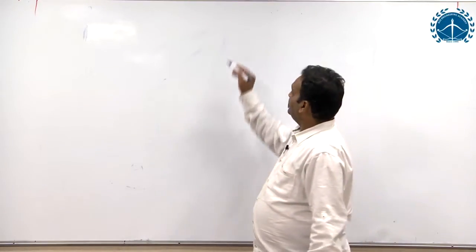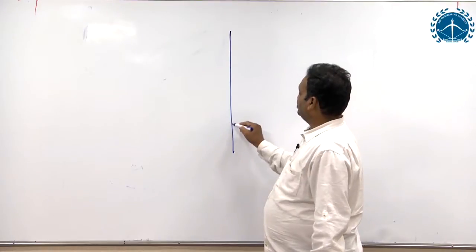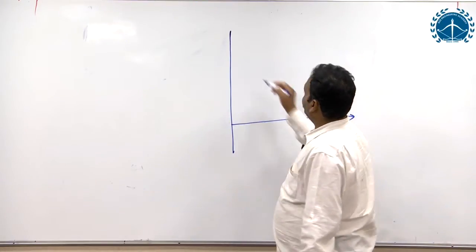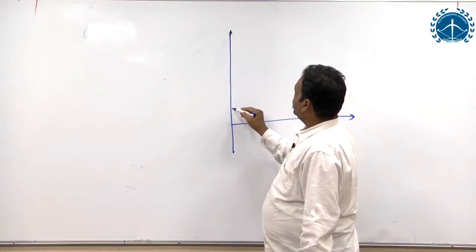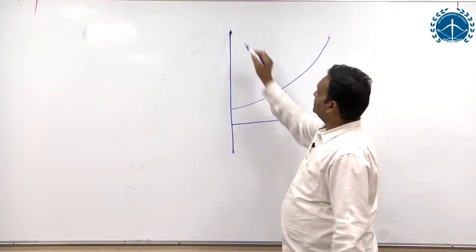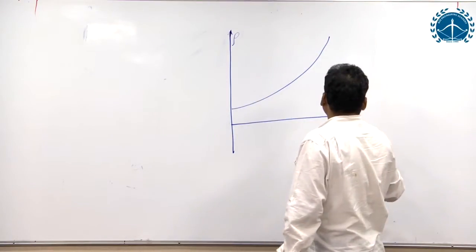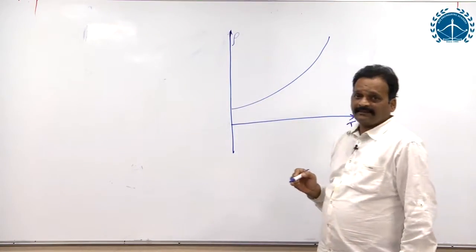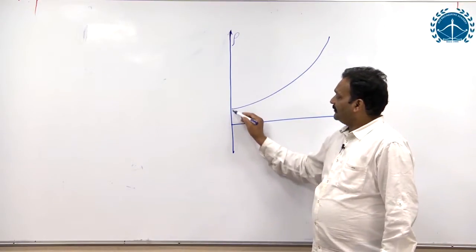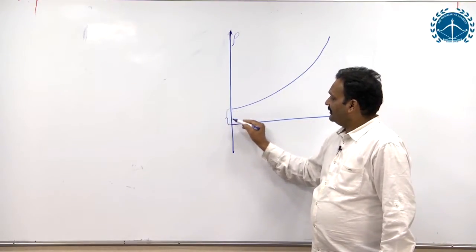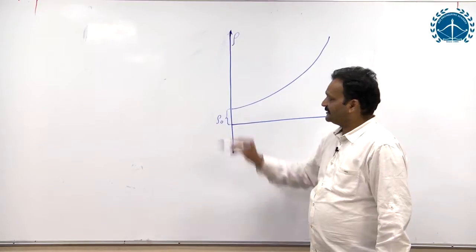Now we have the variation of resistivity of a conductor with temperature like this. This is the graph of resistivity versus temperature in conductors. At T equal to 0, some resistivity will be left out - it is called residual resistivity rho naught.